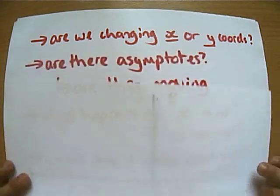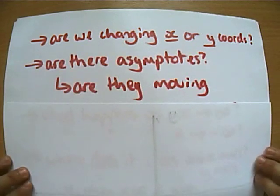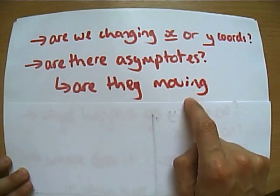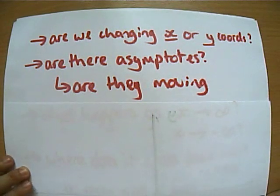Other things to think about then is, are there asymptotes to do with the original graph that you start off with before you transform it? And if there are asymptotes, are they going to end up moving somewhere? Where do they move to?